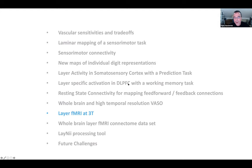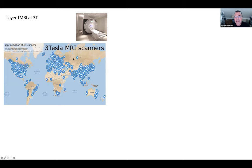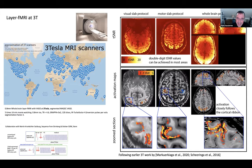At 3 Tesla, there are about 10,000 scanners in the world, so it would be nice to do layer fMRI at 3T. Work by Renzo and his group at Maastricht, and others, has shown 3T layer-level activation is hard but not impossible. The temporal signal-to-noise can be as high as 20 in certain areas around the edges of the brain at 3T.